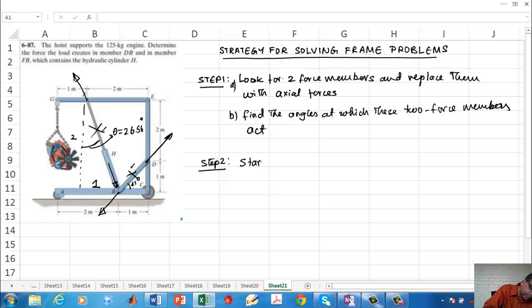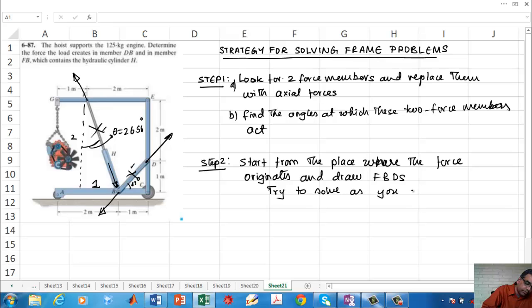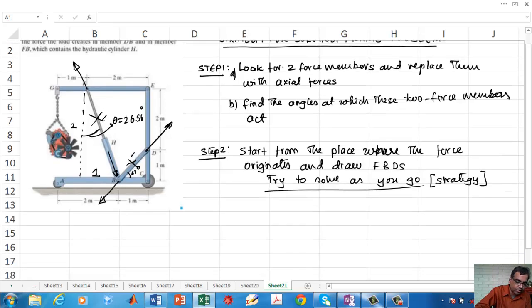Step three: start from the place where the force originates and draw free body diagrams. Try to solve as you go. Now, this is an important step. Notice I did not say solve as you go, I said try to solve as you go. Sometimes you will have more unknowns than equations, so you cannot really solve at that level, but you may be able to solve for some variables. There is some high-level strategy here.